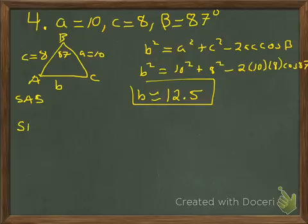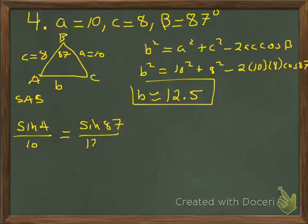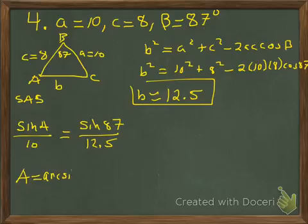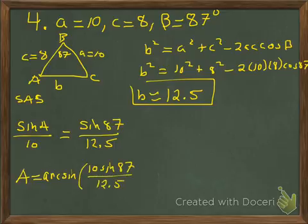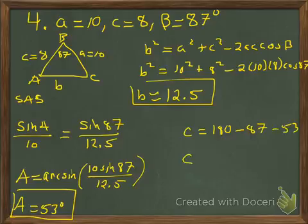Now that I have side b, I can use the law of sines — it's quicker and less likely to produce errors. Sine of A over 10 equals sine of 87 over 12.5. Multiplying both sides by 10 and taking the arc sine: arc sine of 10 sine of 87 over 12.5 gives angle A approximately 53 degrees. There's a little rounding error since I rounded side b. All that's missing is angle C: 180 minus 87 minus 53 gives angle C approximately 40 degrees.